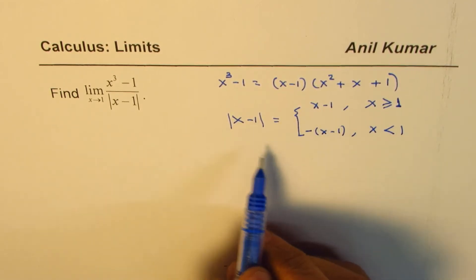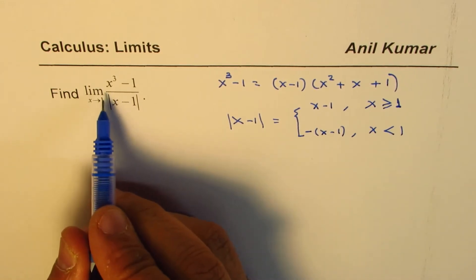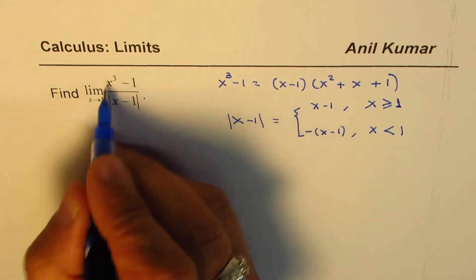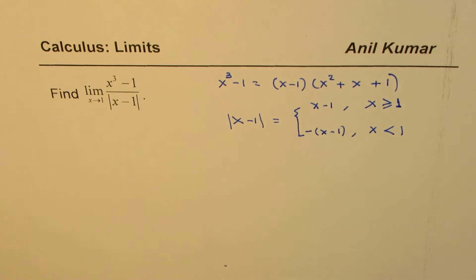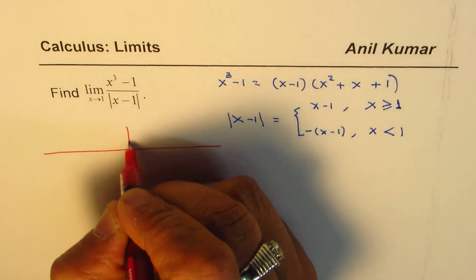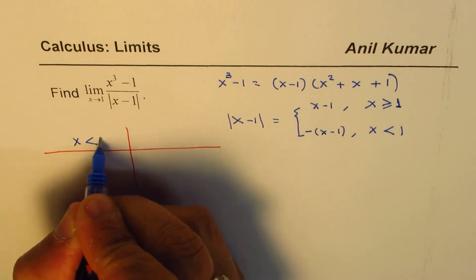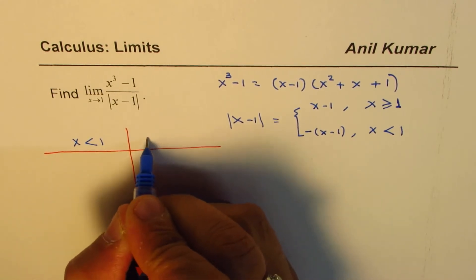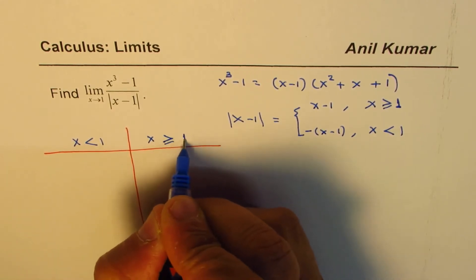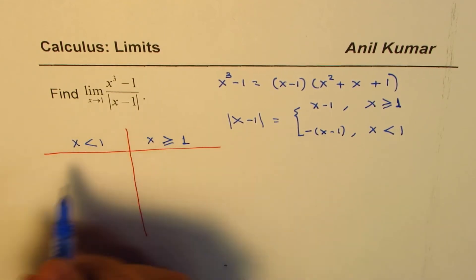So we can write the limit of this function as two different pieces. We'll consider two cases: one when x is less than 1, and the other when x is greater than or equal to 1. If x is less than 1, the absolute value of x minus 1 equals negative of x minus 1.